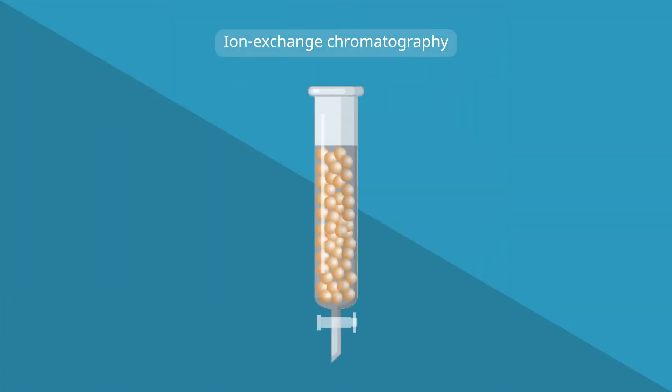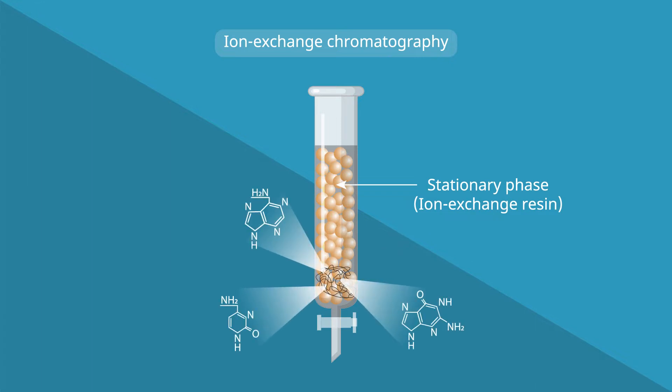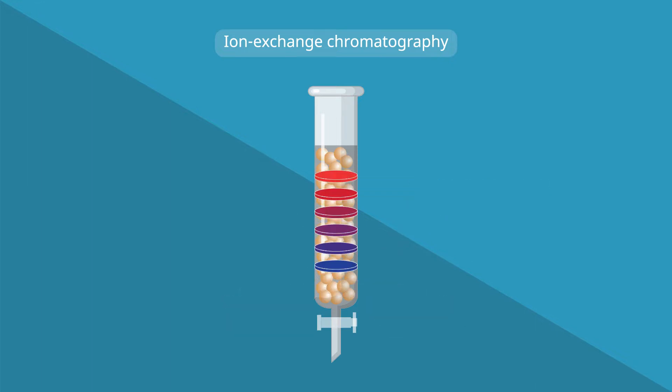Ion exchange chromatography is one of the most popular methods of protein separation. In this method, the components of a mixture are separated based on their binding affinity towards an ion exchange resin.